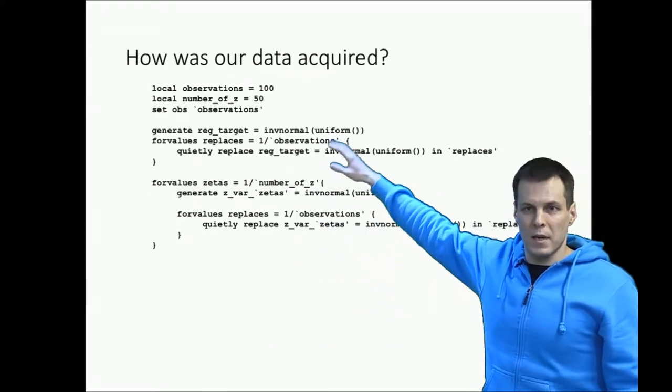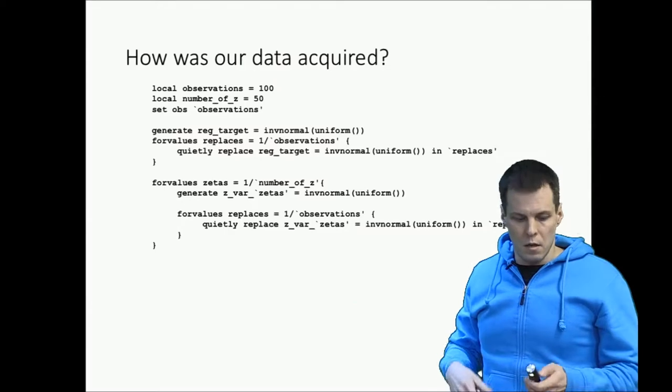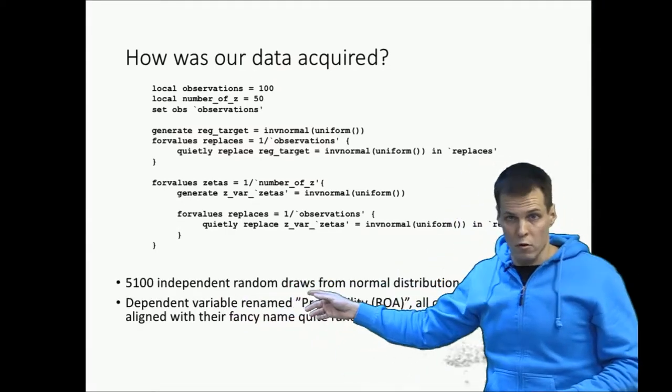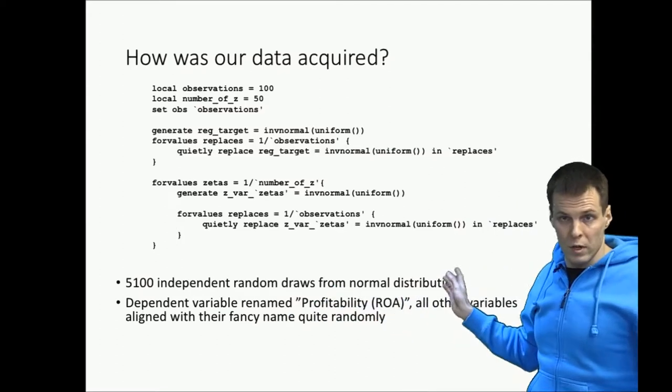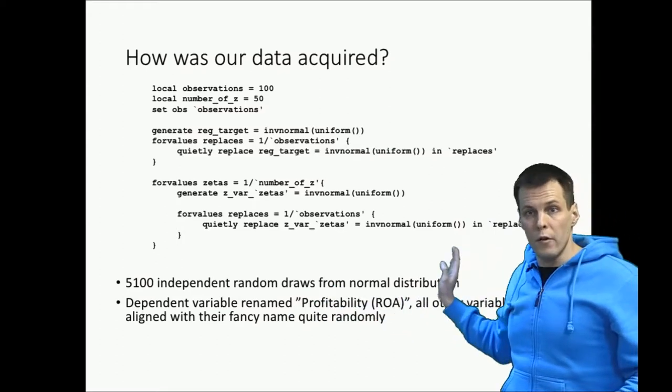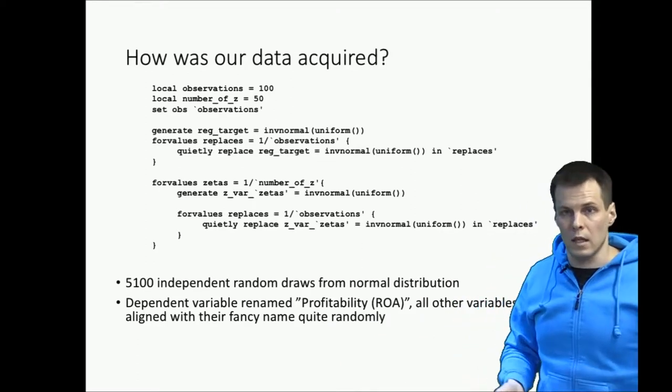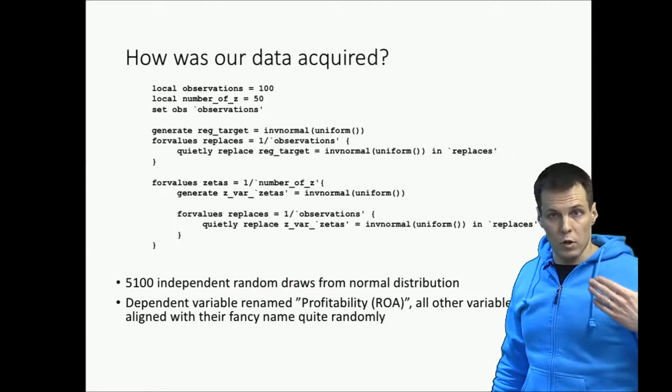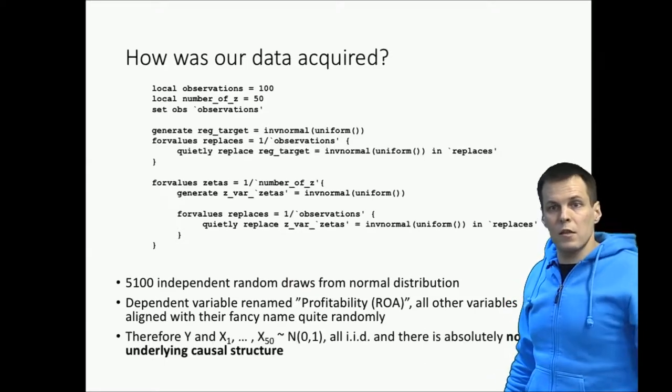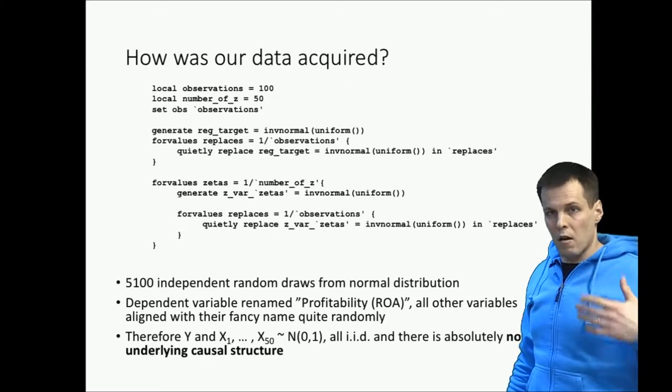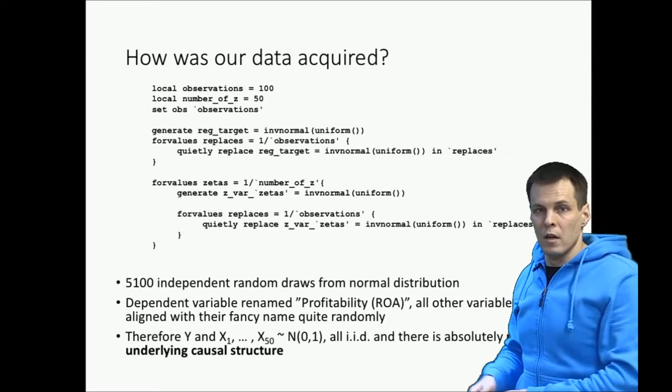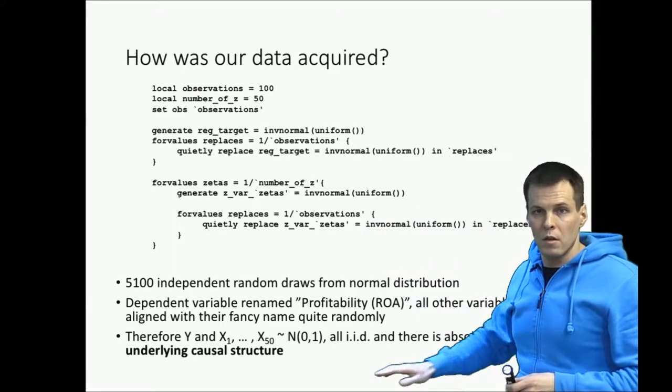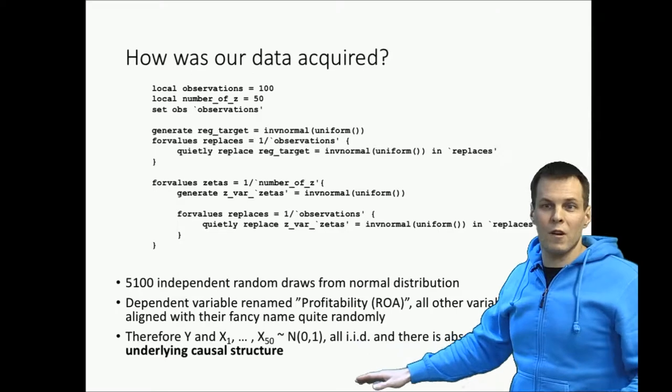Generating this specific data, he had 5,100 independent random draws from normal distribution, which means that his data was purely just noise. There were no statistical relationships in the population and no causal effects whatsoever underlying the data. So he just decided to generate random data that are uncorrelated in the population, give them fancy names, run a regression analysis, and you get 40% explanation. No underlying structure whatsoever.